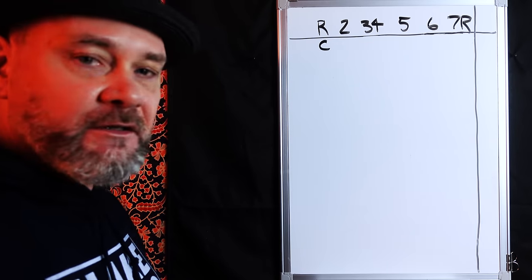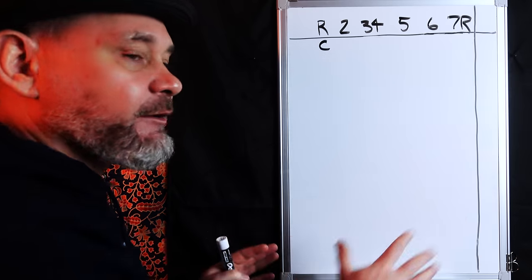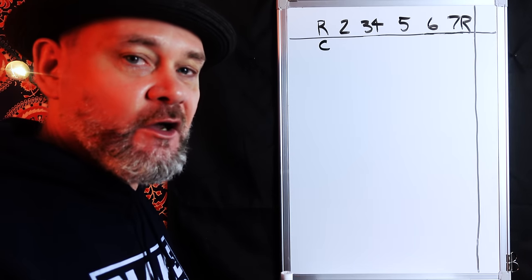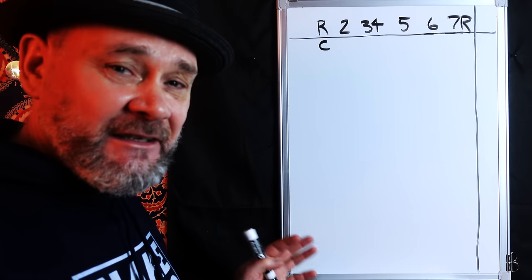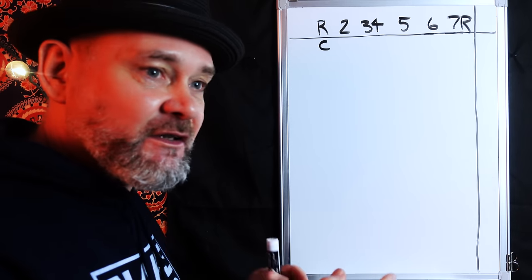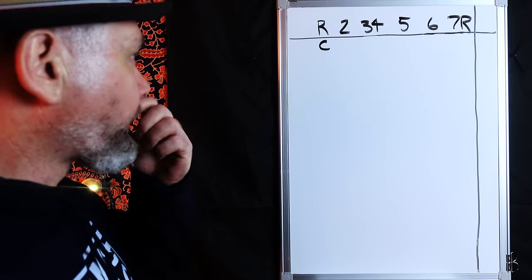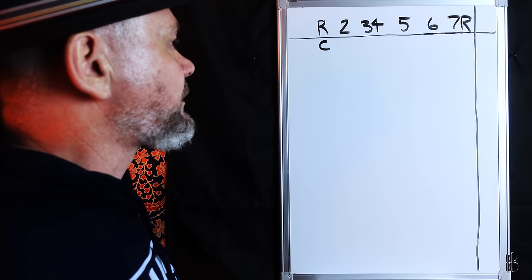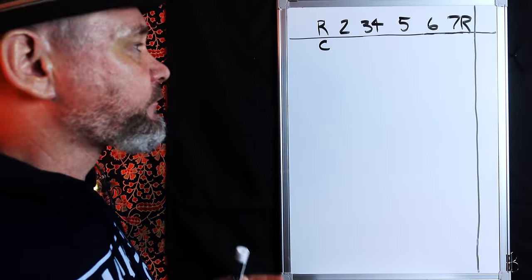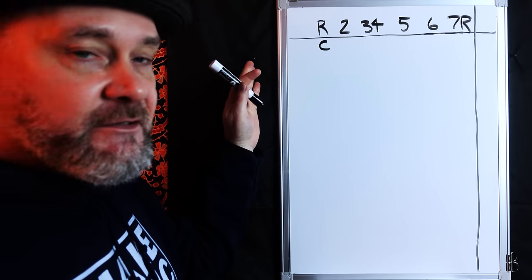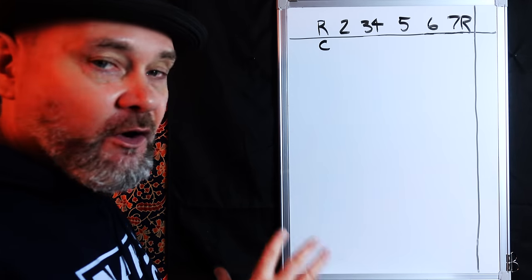Now that we're at my whiteboard, I'm going to show you how easy this is going to be to understand because everything will be written in front of you. Every time someone shows you what a cycle of fifths or fourths is, it's a little confusing because it goes in a circle and there's not all the information there. Here, all the information will be here. I've got some numbers up there — that is going to be our formula for the major scale, because we're going to do all major scales.